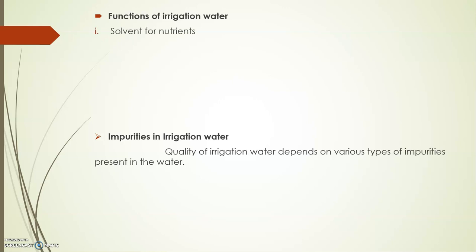The first function is that irrigation water acts as a solvent for nutrients — water forms a solution of nutrients and this solution is absorbed by the roots, so water acts as a nutrient carrier. The second function is that irrigation water supplies moisture, which is essential for the chemical action within the plant that leads to crop or plant growth.